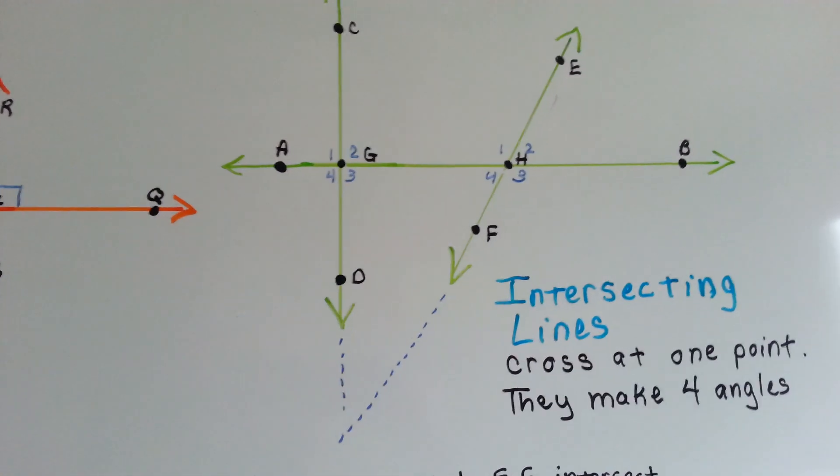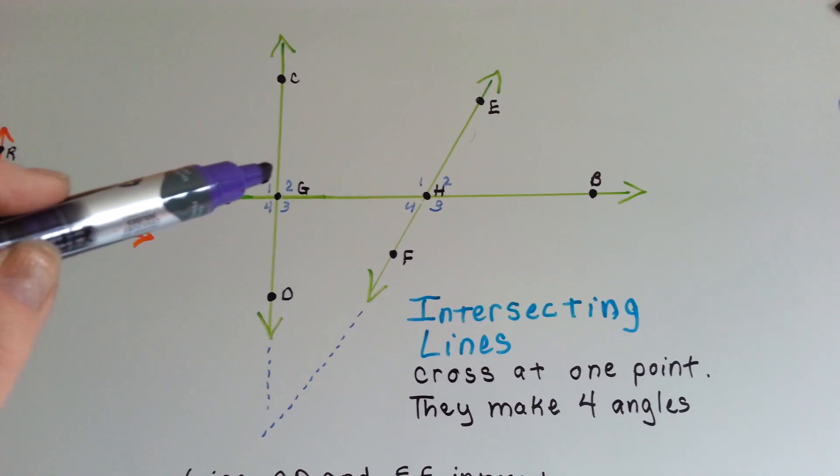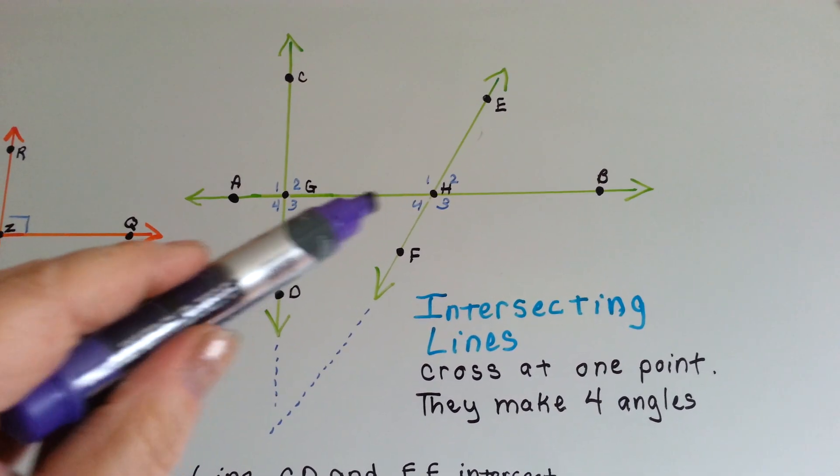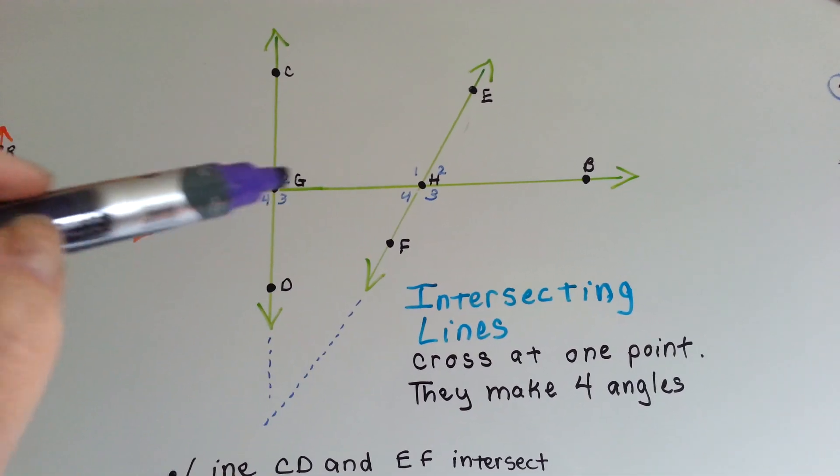Intersecting lines cross at one point and they make four angles. See? Where this line CD is intersecting line AB, it makes one, two, three, four corners, four angles.